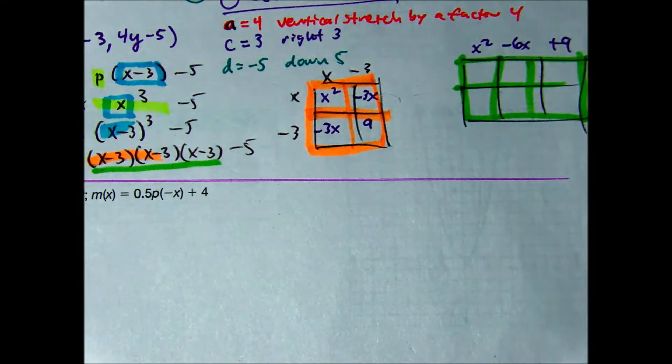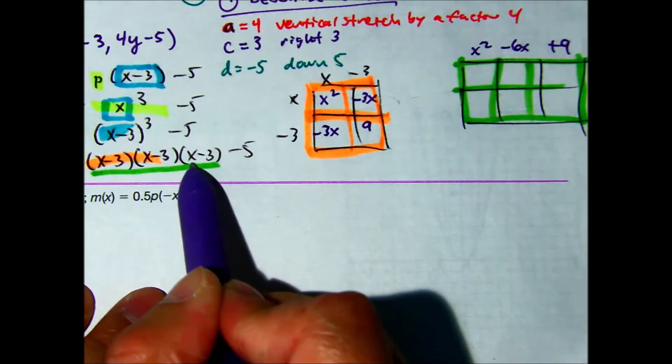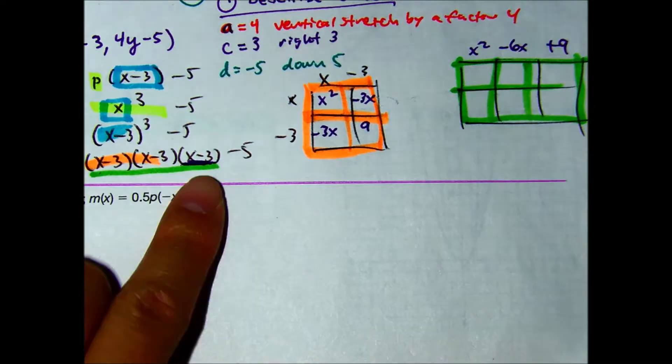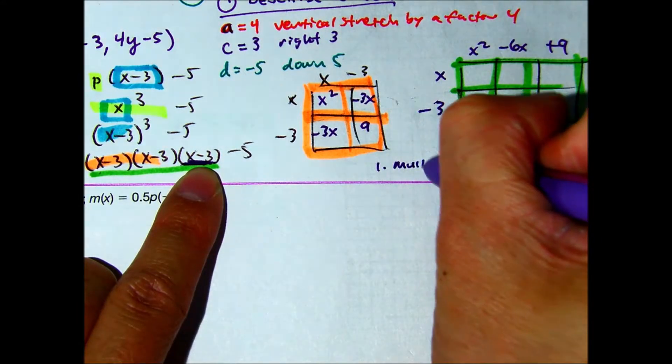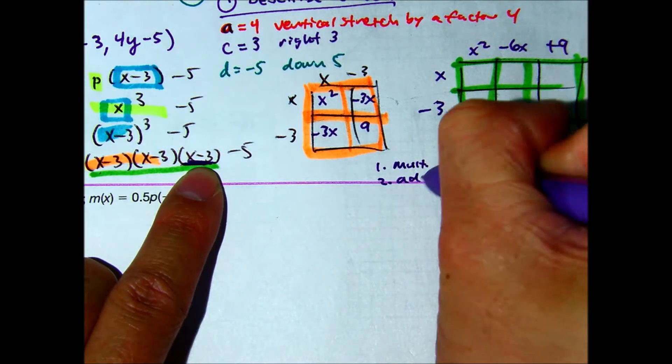Raise your hand if you got the orange box. Okay. Now, the X minus three here, I'm just writing over here. So, Waleed multiplied first, and then he added or combined like terms.